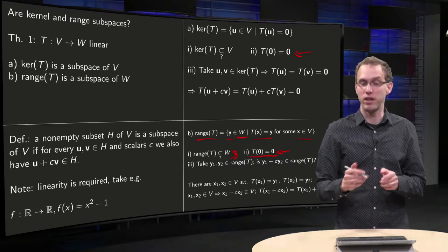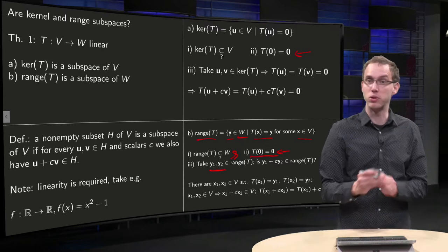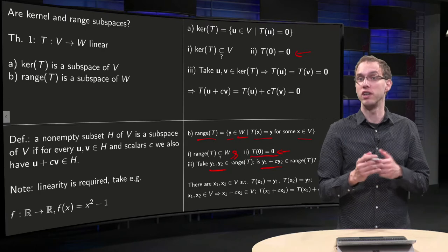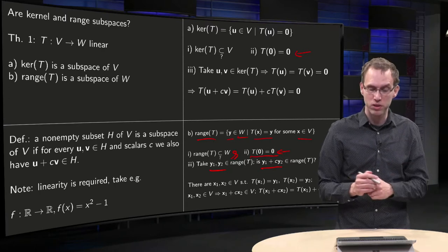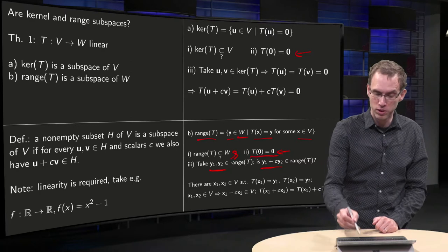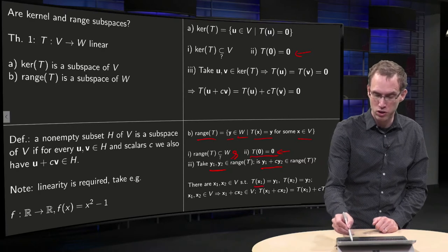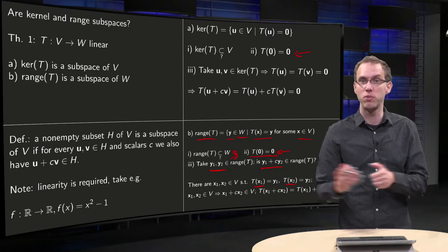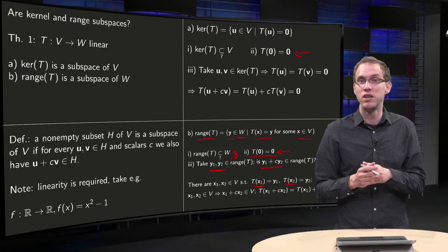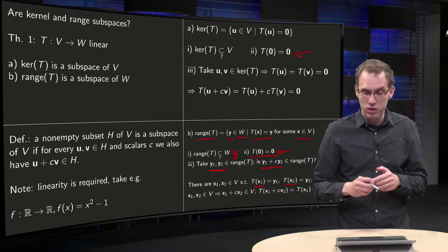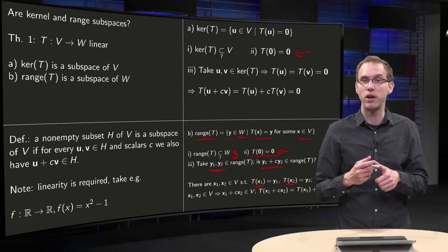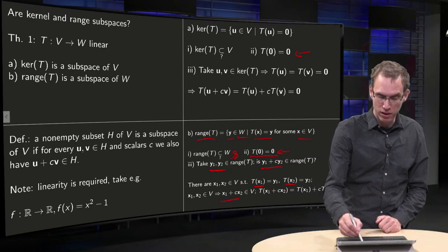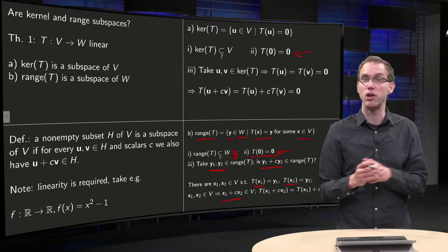And then we have to show that if you have some y1 and y2 in the range, do you also know that y1 plus c times y2 is also in the range? Because y1 and y2 are in the range by assumption, you know that there are x1 and x2 in V such that T of x1 equals y1 and T of x2 equals y2. But V is a vector space, so that means if x1 and x2 are in V, then the vector x1 plus c times x2 is also in V.